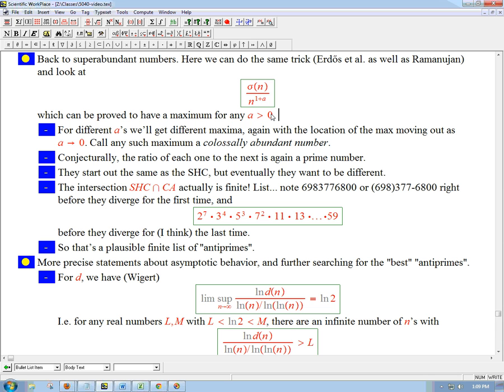Again, it depends on the a we pick - where the maximum is going to be, how we tune things. I'm not going to draw pictures of MATLAB graphs like before, but they're very similar. For different a's we're going to get different maxima, and again the location of the max is going to move out as a goes to 0. It's going to be easier for σ(n) to beat n^(1+a) for small numbers, but eventually it wimps out and starts to be beaten, and you get different locations for the maximum.